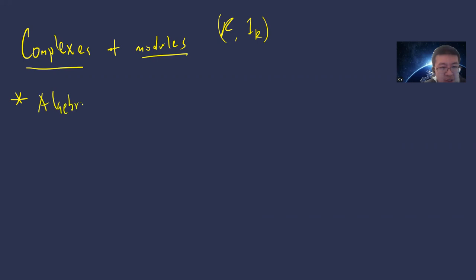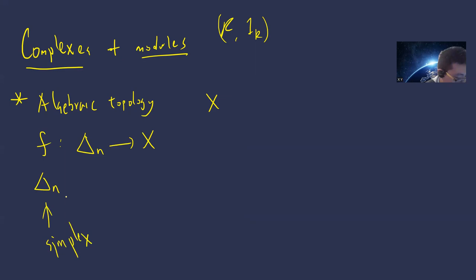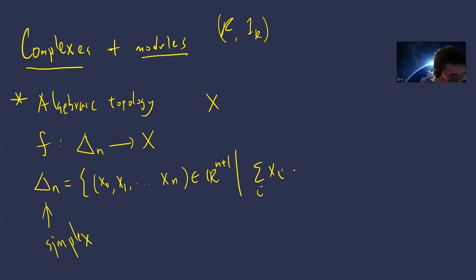The motivating example of complexes comes naturally from algebraic topology. In algebraic topology, as you can see in Hatcher, the starting point is that you have some topological space X and you introduce continuous functions from Δⁿ to X, where Δⁿ is the so-called simplex: the set of points (x₀, …, xₙ) in ℝⁿ⁺¹ with coordinates summing to one and all coordinates ≥ 0.